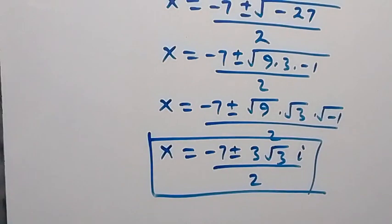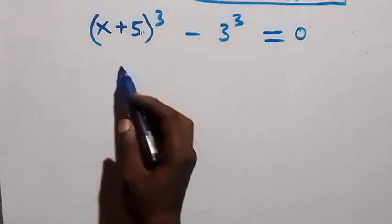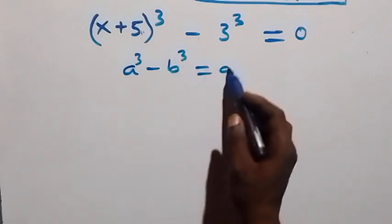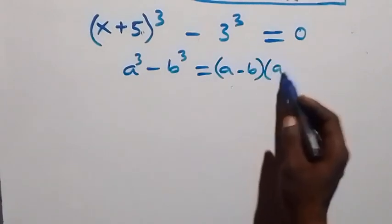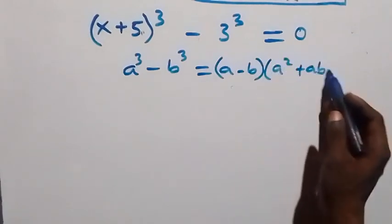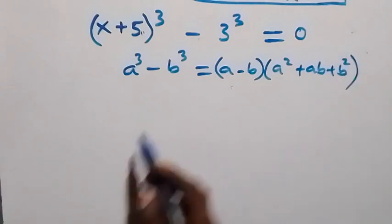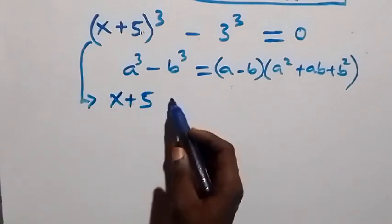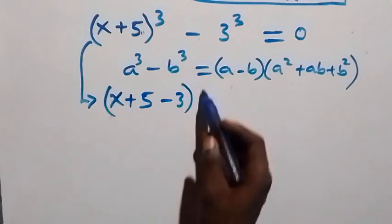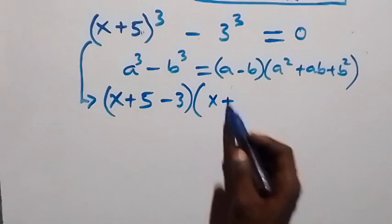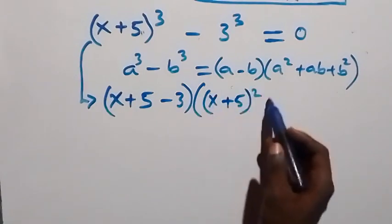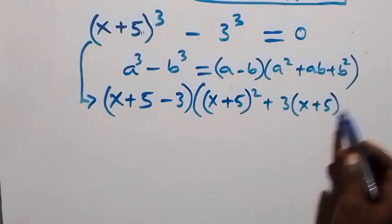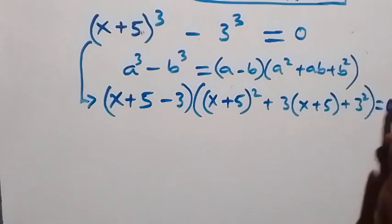Now for the second case: x plus 5 raised to power 3 minus 3 raised to power 3 equals 0. This follows from the identity a cubed minus b cubed equals a minus b times a squared plus ab plus b squared. So this becomes x plus 5 minus 3, in brackets, times x plus 5 squared plus 3 times x plus 5 plus 3 squared, close bracket, equals 0.